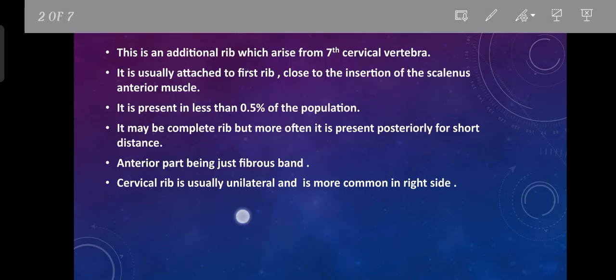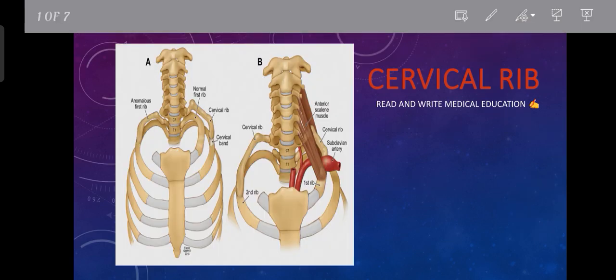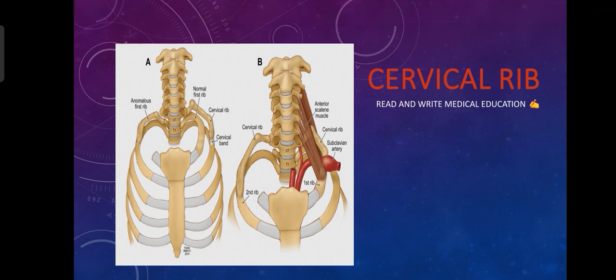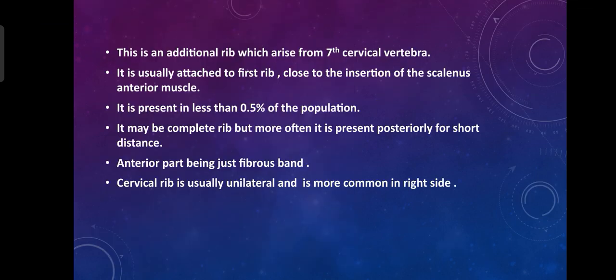Welcome back to my YouTube channel. Today we will discuss the cervical rib. The cervical rib is an additional rib which arises from the seventh cervical vertebra. It is usually attached to the first rib close to the insertion of the scalenus anterior muscle.